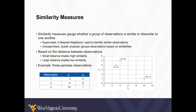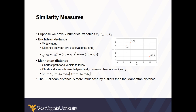Similarity measures gauge whether a group of observations is similar or dissimilar to each other. It's important in data mining to find patterns and relationships, and similarity measures are one way we find those patterns and relationships by identifying which points in the data seem to be near each other. Let's apply two common measures of similarity to three pairwise observations — observations one, two, and three — plotted on a chart so you can visually see where they're located. The Euclidean and Manhattan distances are common measures of similarity, calculated with the equations on the slide. It is important to note that the Euclidean distance is more influenced by outliers than the Manhattan distance.